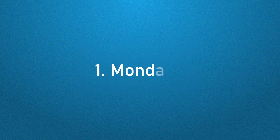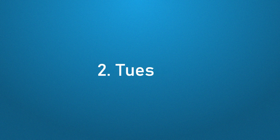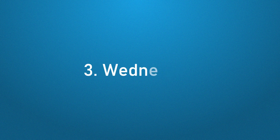And now let's start with days. As you know, we have seven days in English language. The first one is Monday, Tuesday, Wednesday. Remember, we don't pronounce the D. We say Wednesday.